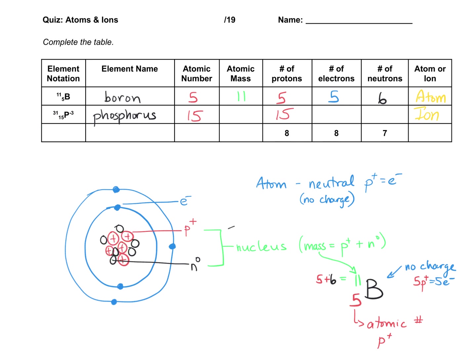You just, you've got the mass, 31 minus 15, to give us the 16 neutrons. So knowing again that the protons and neutrons add up to the mass, if you know the mass and the protons, you can just subtract to get the neutrons.